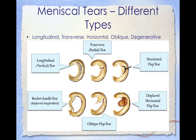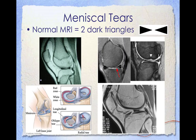Meniscus tears are classified by their shape and location. Types include longitudinal or vertical tears, transverse or radial tears, horizontal flap tears, bucket handle tears, oblique flap tears, and displaced horizontal flap tears. On a normal MRI, two dark triangles represent the menisci; the MRI images shown are missing one or both of those dark triangles, indicating potential damage to one or both menisci.